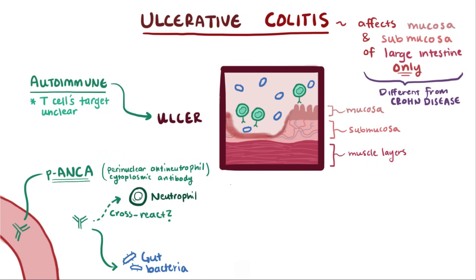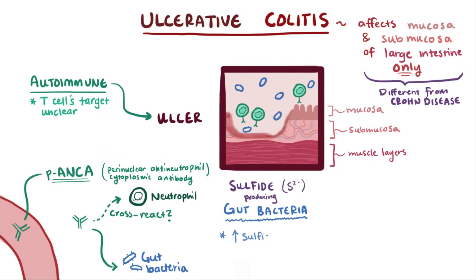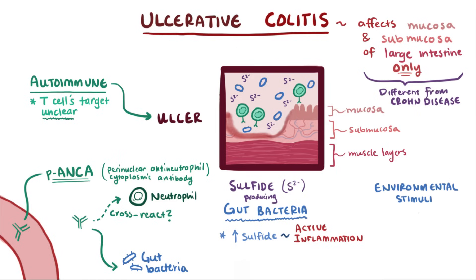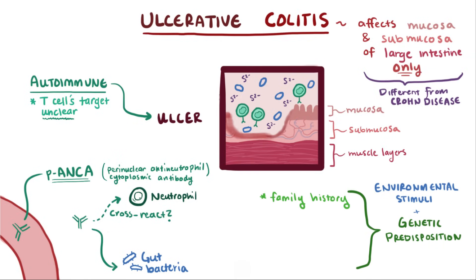Patients also seem to have a higher proportion of gut bacteria that produce sulfides, and often high sulfide production is correlated with periods of active inflammation as opposed to remission. Ultimately, these are mostly correlations and theories, and we've yet to nail down the precise mechanism behind mucosal destruction. The cause is ultimately some combination of environmental stimuli — perhaps the sulfide-producing bacteria — mixed with a genetic predisposition, because patients with a family history of ulcerative colitis are more likely to develop the disease themselves.